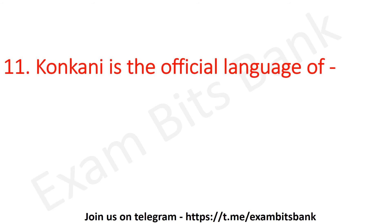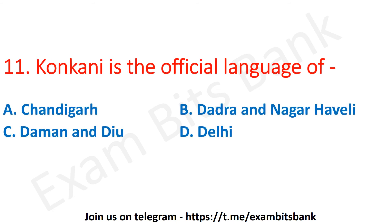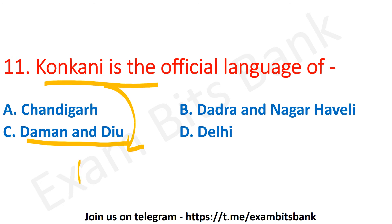Konkani is the official language of which territory? Options are Chandigarh, Dadra and Nagar Haveli, Daman and Diu, or Delhi. The correct answer is option C — Daman and Diu. Konkani is also the official language of Goa. It is written in the Devanagari script and is generally spoken in Western and Southern India.